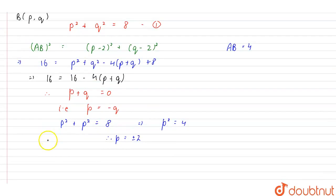That is, (2, -2) and (-2, 2). So, these are the two required coordinates of B. Thank you.